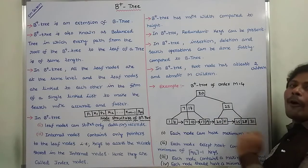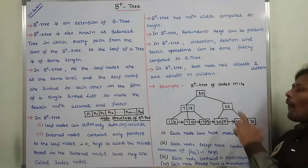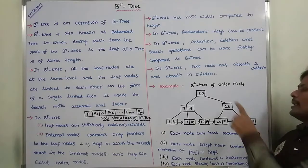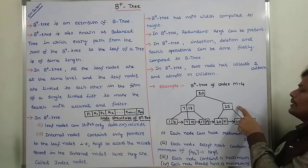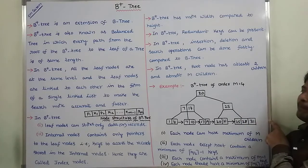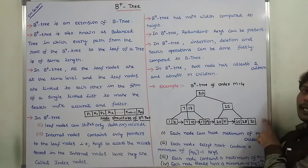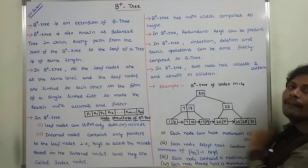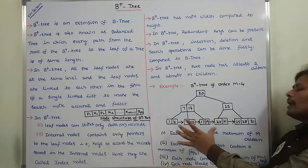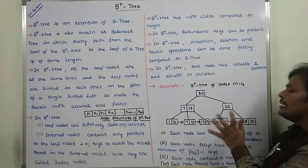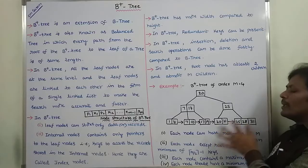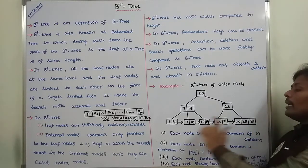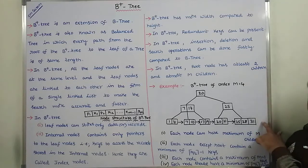In the case of B plus tree, all the leaf nodes are at the same level. This is level 1, this is level 2, and this is level 3. All the leaf nodes — 1, 4, 7, 10, 17, 19, 20, 21, 25, 28, 31 — are at level 3.